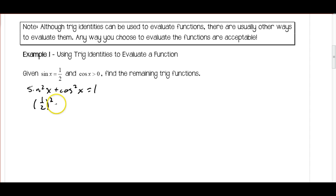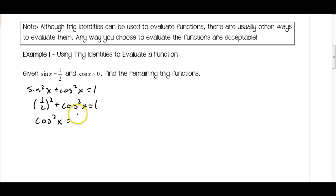I have one half squared plus cosine squared x is equal to 1. One half squared is one fourth; I subtract that from both sides, so I get cosine squared x is equal to three fourths. When I take the square root of both sides I get cosine of x equals square root of three over two. We could make a triangle and figure this out more quickly, but I'm just showing how we could use the identities.